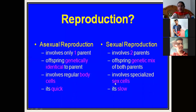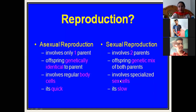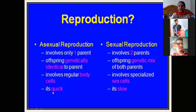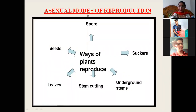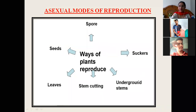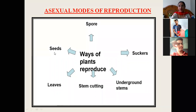In sexual reproduction, specialized sex cells are involved, whereas in asexual reproduction regular body cells are involved. Asexual reproduction is very quick, whereas sexual reproduction takes time. Various asexual modes of reproduction in plants can be from spores, suckers, underground stems, stem cuttings, leaves, or from seeds.